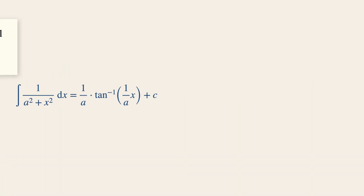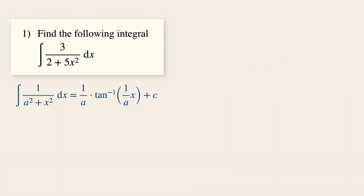Now let's take a quick look at this example: integrate 3 over 2 plus 5x squared dx. We employ this technique when we see that in the denominator there is a plus sign and an x squared term, and in the numerator the value is a constant number, such as 3 here.